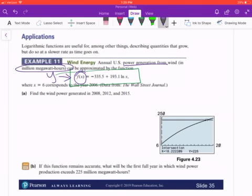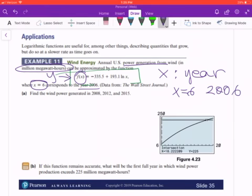The independent variable x represents a year, where x = 6 corresponds to 2006. The first question asks us to find the wind power for the year 2008.